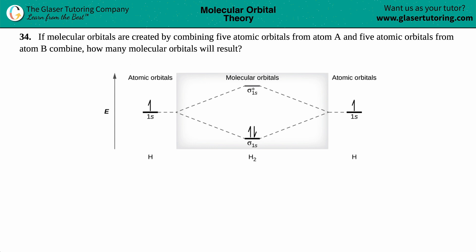Number 34. If molecular orbitals are created by combining five atomic orbitals from atom A and five atomic orbitals from atom B, and they combine together, how many molecular orbitals will result?